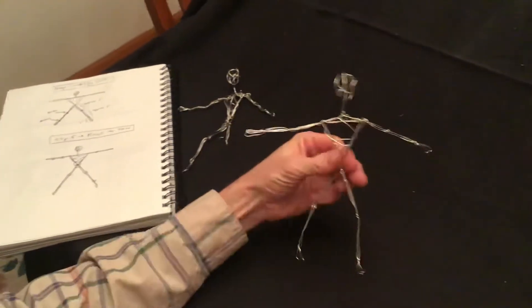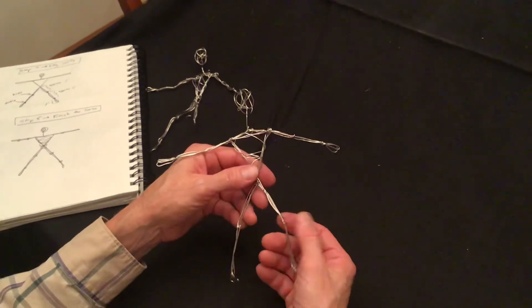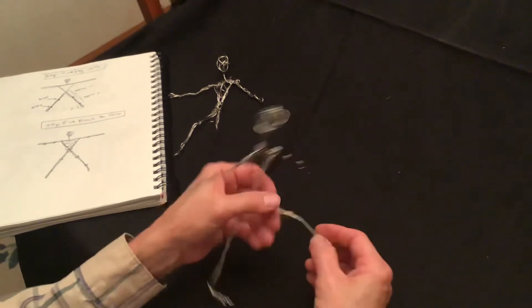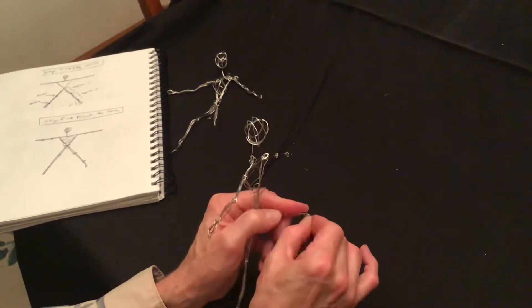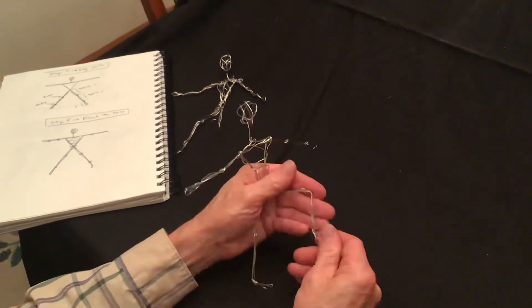Now you can pose the sculpture however you want. Just make sure that when you bend the joints, you only bend them at the joint. So in other words, I'm going to bend the knee right here where the knee goes, and I want to make sure that the bones stay straight.